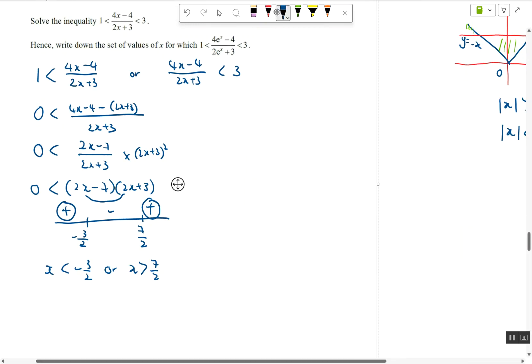So in this case, this will be (4x - 4) minus 3 times (2x + 3), over (2x + 3). Make common denominator, bring over to the left side. So I'm going to have negative 2x because of this, and then minus 4 minus 9, that will be minus 13.